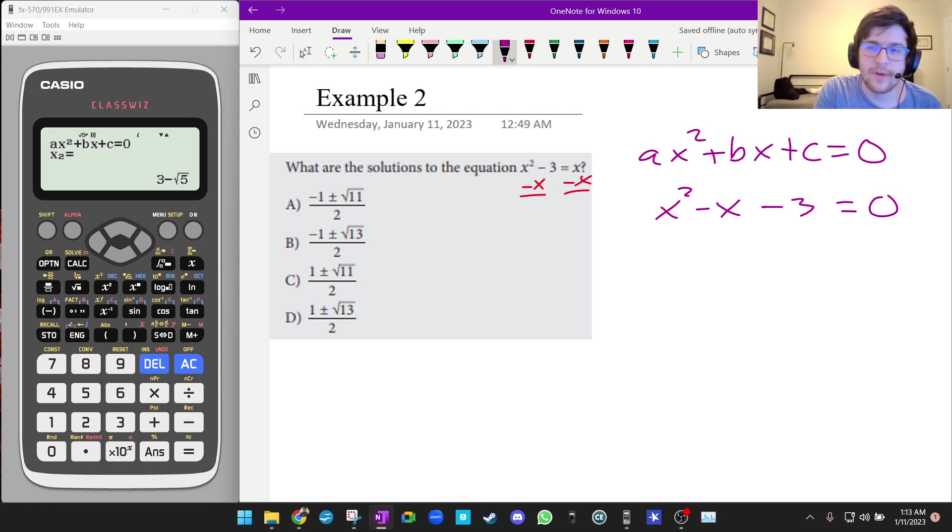Now we're going to identify ABC. A is 1, B is -1, and C is -3. Let me just jot that down really quick. A is 1, B is -1, and C is -3.